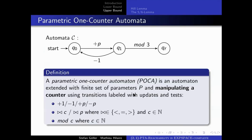What is a parametric one-counter automaton? It's an automaton extended with a set of parameters that manipulates a counter. You can increment or decrement it, parametrically or not; you can compare it against constants and parameters; and you have modulo tests. Configurations are pairs of states and counter values — similar to a parametric timed automaton except you manipulate a counter instead of clocks.